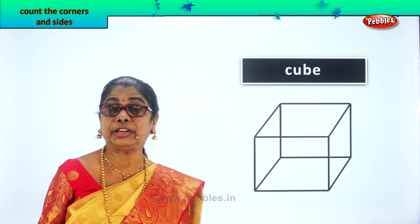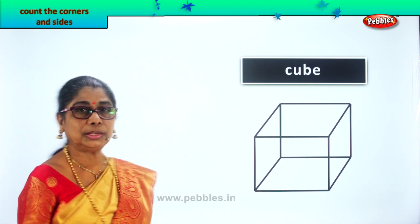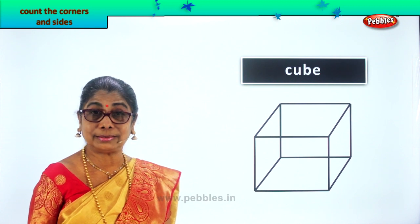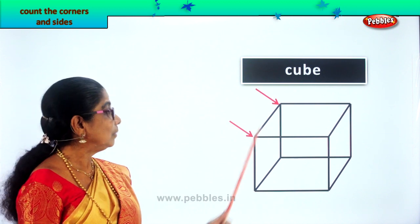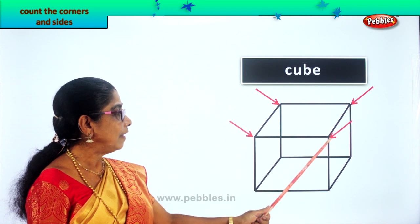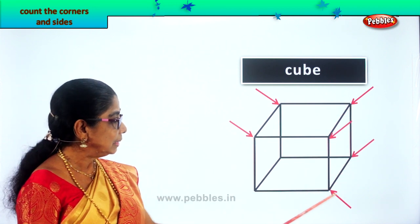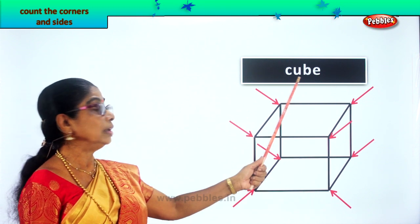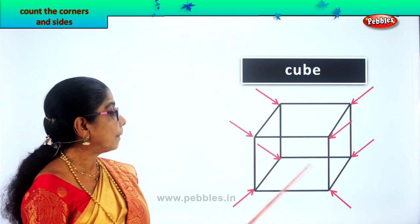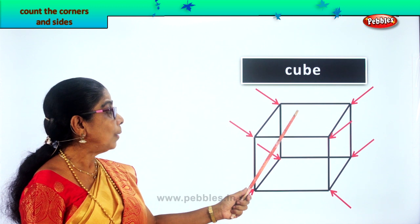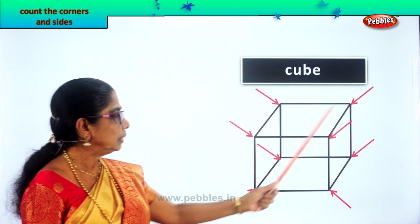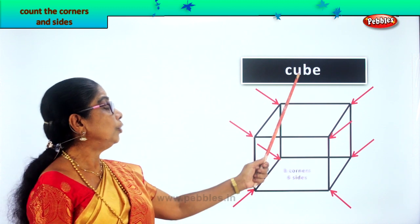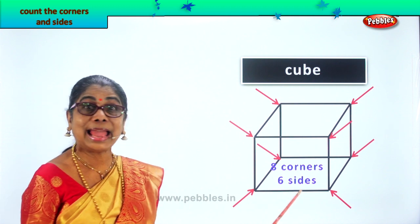Now we are going into solid figures. What is this you see? It's a cube. Now we are going to count how many corners a cube has. One, two, three, four, five, six, seven, eight corners. A cube has eight corners. What about the sides? A cube has one, two, three, four, then top five and six. So a cube has eight corners and six sides.